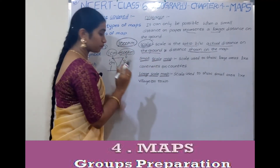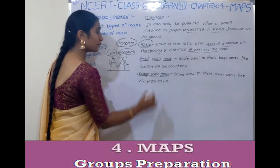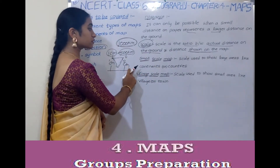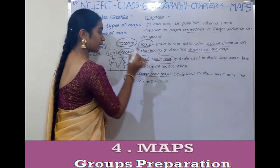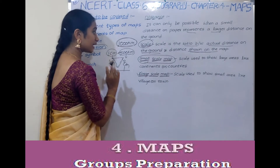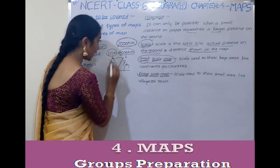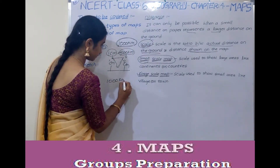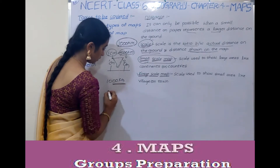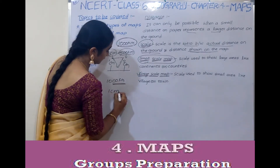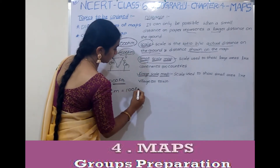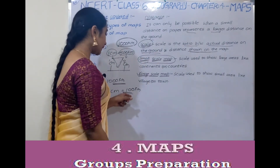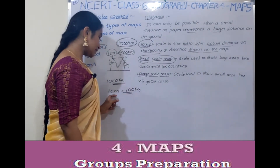Now let's look at large-scale and small-scale maps. That is a large-scale map — 1000 km represented where 1 cm equals 100 km.